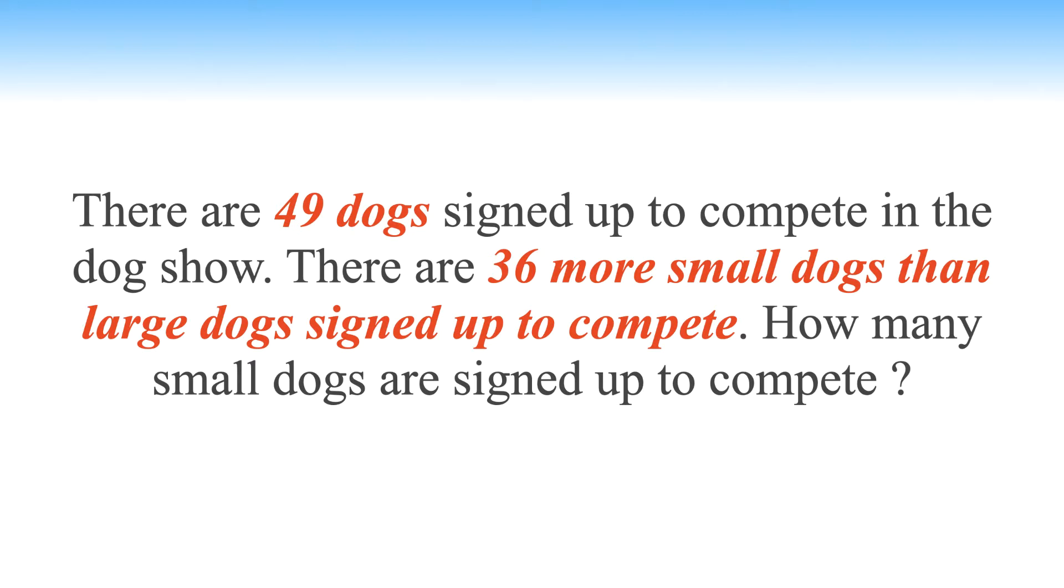How many small dogs are signed up to compete? To break it down, if there are 49 dogs total and there are 36 more small dogs than large dogs, you would subtract 36 from 49. By that measure there are 13 large dogs and 36 small dogs. So that means the answer is 36 small dogs, right? Is that a trick question?